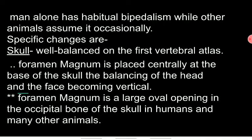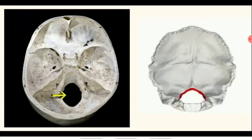From this opening, the spinal cord connects. You can see in this diagram that this is an oval opening. In the human being, the foramen magnum is in a central position, and because of this central position, the skull is able to adopt and maintain the vertical position.